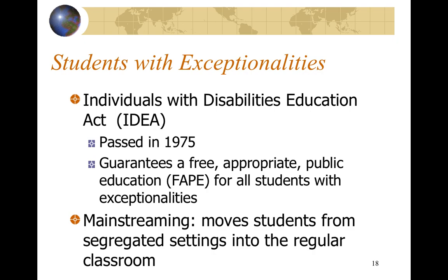Let's talk about students with exceptionalities. The Individuals with Disabilities Act, or IDEA, passed in 1975, guarantees a free appropriate public education for all students with any exceptionality. This is essentially called mainstreaming — trying to move students from segregated special ed classrooms into regular classrooms as much as possible. It was in 1975 that students with disabilities first got legal rights of access to education.